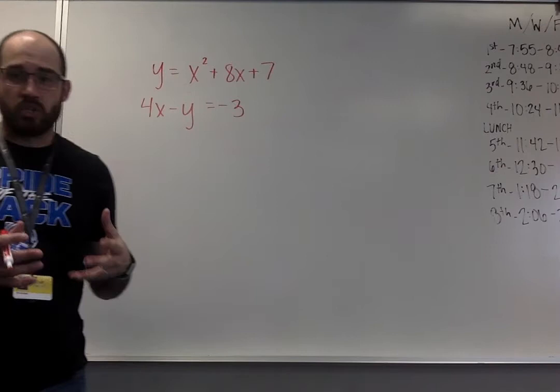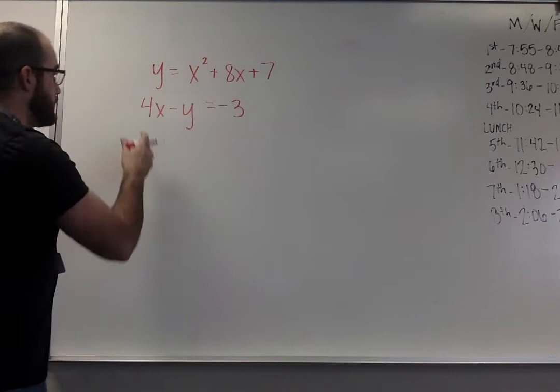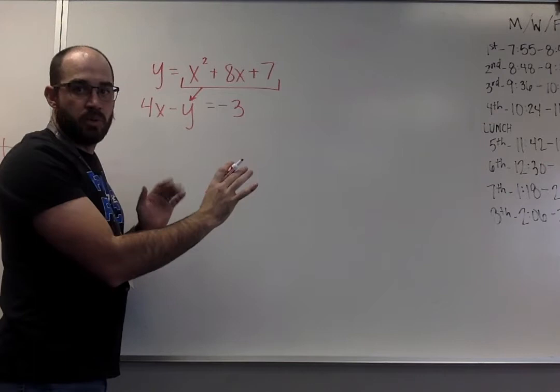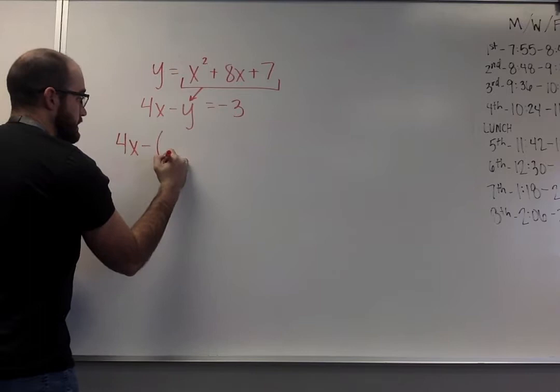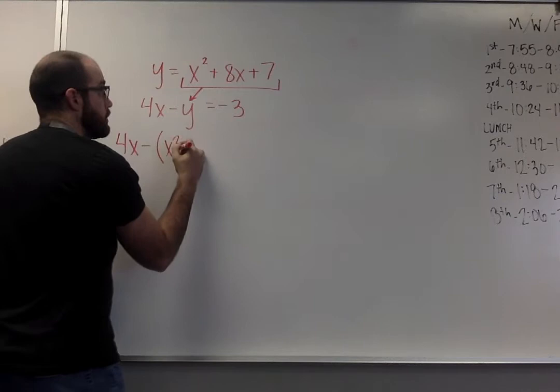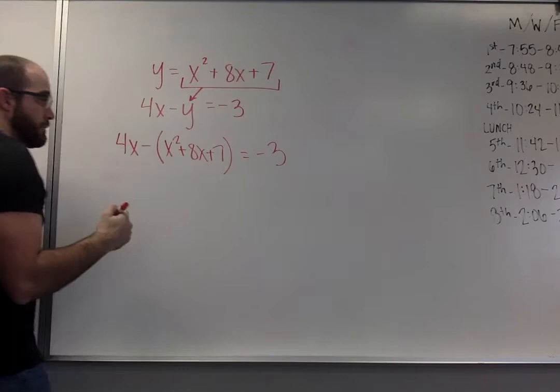For this one, when we're solving it algebraically, we're looking for a variable that's all by itself. Whatever variable is by itself, we're going to substitute into the other equation. So in this case, I have my y completely by itself. So I'm going to plug whatever y is equal to in for the y in the other problem. This is just like our algebra one stuff when we did systems. So I'm going to plug that in. So I'd have 4x minus. This time I'm going to put the parentheses around it. The reason is I have a negative in front. So that means essentially I'm going to have to distribute that negative through everything inside of my parentheses. So I'm going to have my x squared plus 8x plus 7 equals the negative 3.